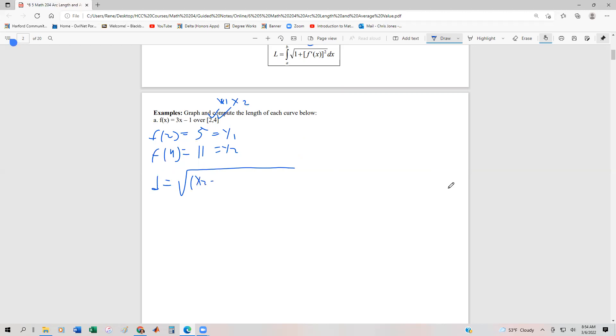We're going to use x2 minus x1 squared plus y2 minus y1 squared. And so that's going to give us the square root of 4 minus 2 squared plus 11 minus 5 squared. And that's going to turn into 4 plus 11 minus 5 is 6. 6 squared is 36. So we get square root of 40 or 2 roots of 10.